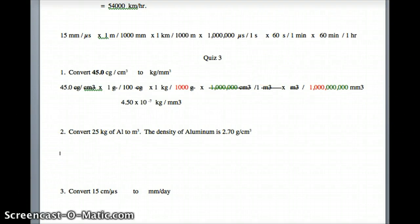Problem two. We have 25 kilograms going to cubic meters. You need to use density as a conversion between mass and volume. Since the density is given in grams per cubic centimeter, you will need to change kilograms to grams.